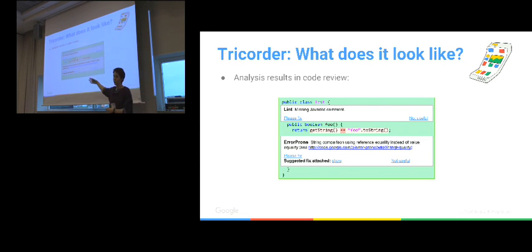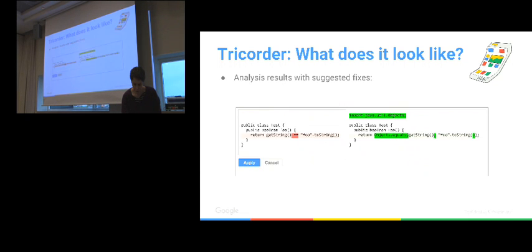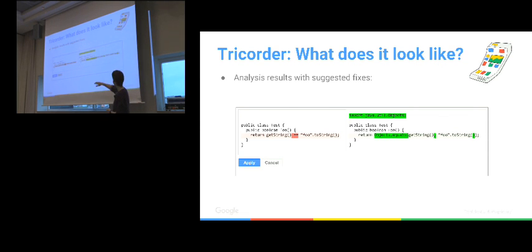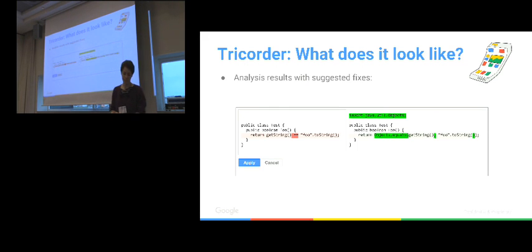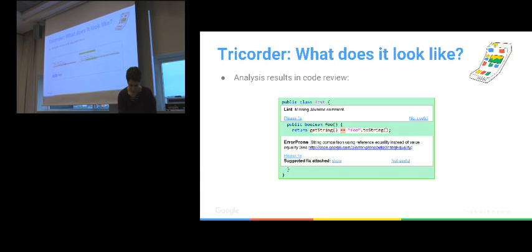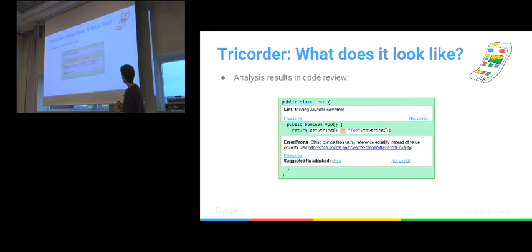In the case of Error Prone, it's saying this is a problem, you can read more about it here, and if you want it can suggest a fix. If you click that button, you get a view showing your code and what it would change it to. You can have more than one suggestion and pick the one you like most. So you start to have an interaction with the robot.